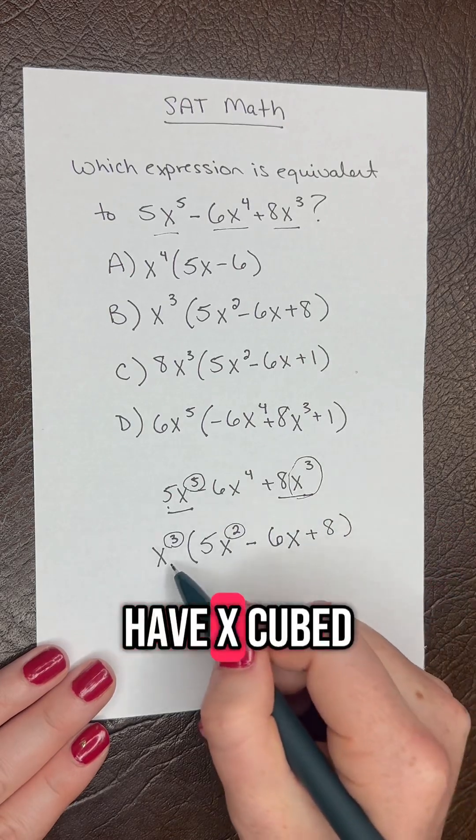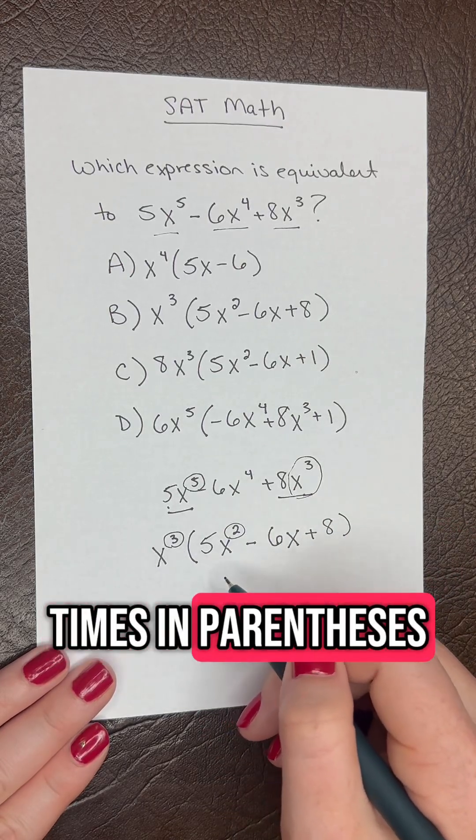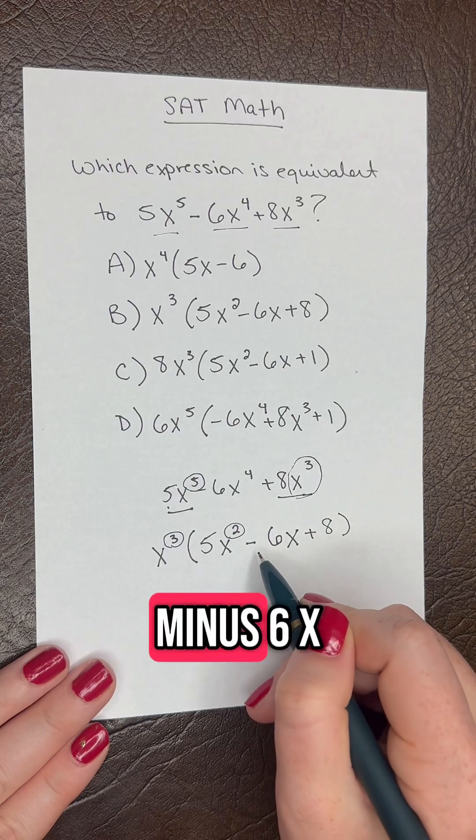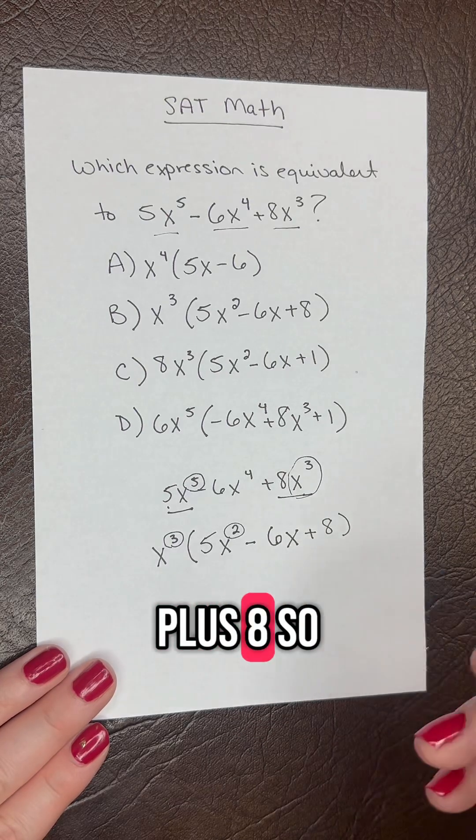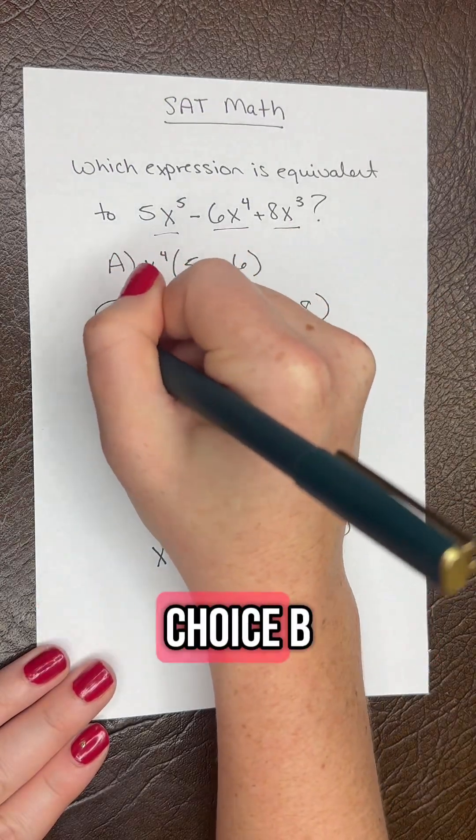So here we have x cubed times in parentheses 5x squared minus 6x plus 8. So that matches answer choice B.